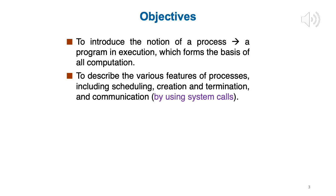The second objective is to learn more about processes — programs in execution — and to describe their various features, including scheduling, creation, termination, and communication. We will discuss system calls for each one of these. When I want to create a process, what system call do I call? If I want two processes to communicate, what system calls do I need to use? We will be writing C programs which perform these operations using system calls. The two objectives are to discuss processes and to do some programming using system calls that illustrate various operations which can be performed on processes.